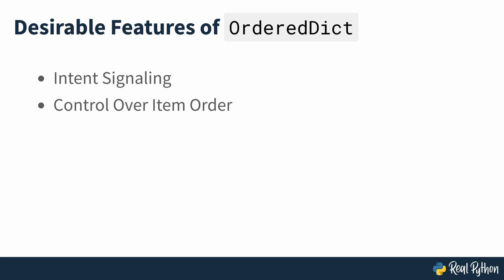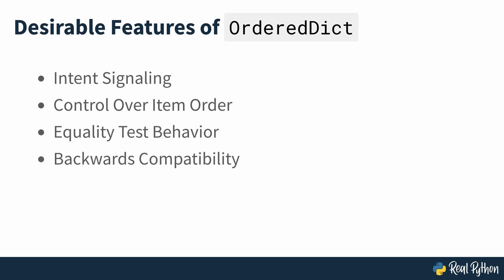Control over the order of items: if you need to rearrange or reorder the items in a dictionary, then you can use move_to_end and the enhanced variation of pop_item. Equality test behaviour: if your code compares dictionaries for equality and the order of items is important in that comparison, then OrderDict is the right choice. There's at least one more reason to continue using OrderDict in your code: backwards compatibility. Relying on regular dictionaries to preserve the order of items will break your code in environments that run versions of Python older than 3.6. It's difficult to say if Dict will ever fully replace OrderDict. At the moment, OrderDict still offers interesting and valuable features that you might want to consider when selecting a tool for a given job.